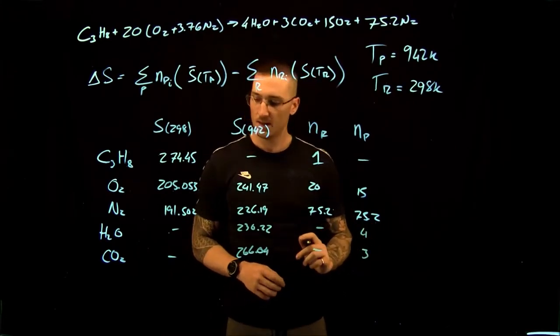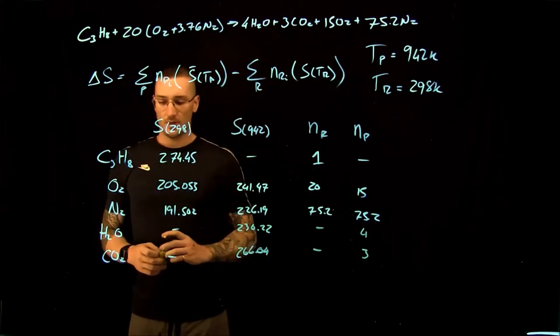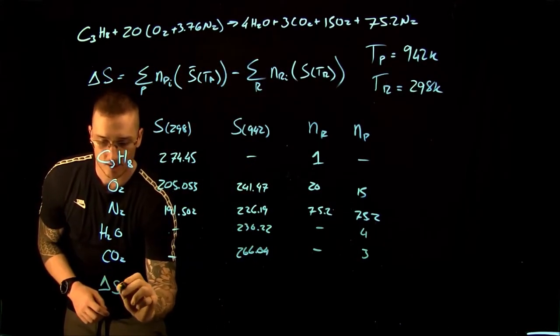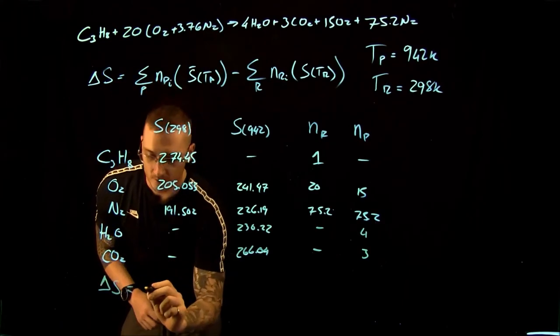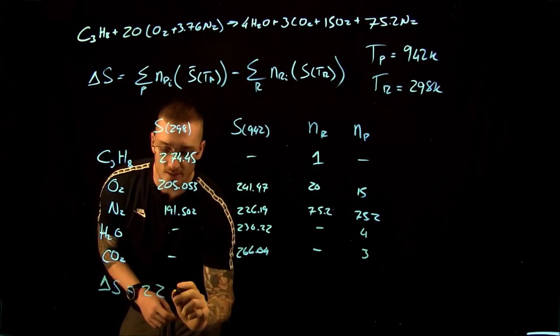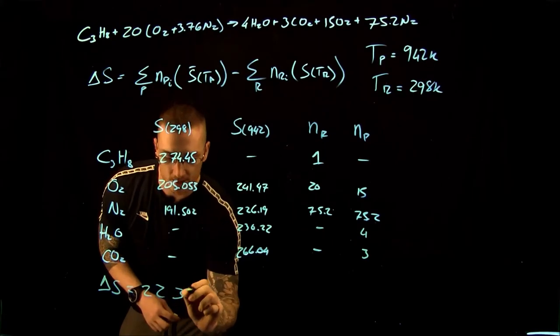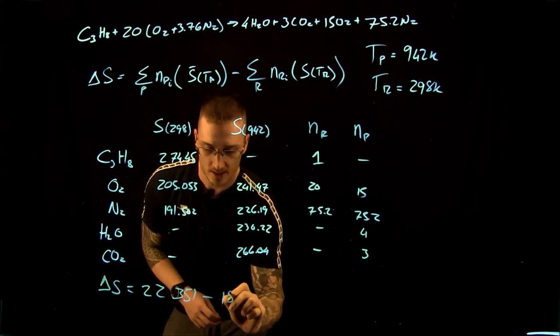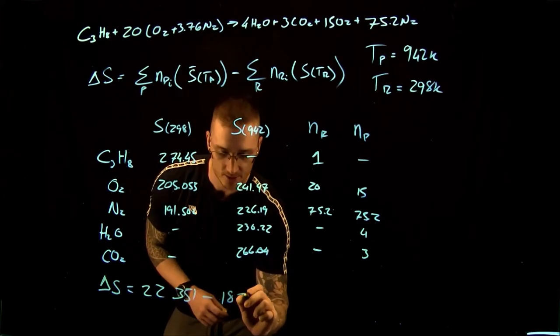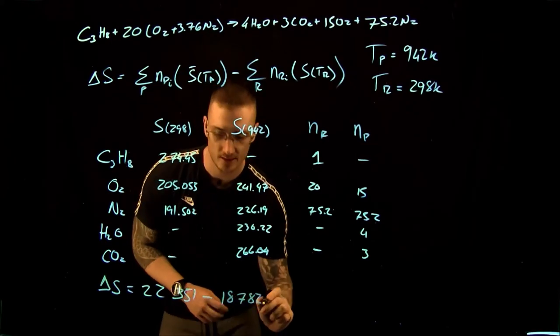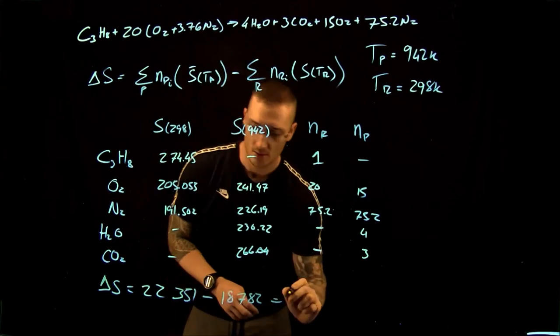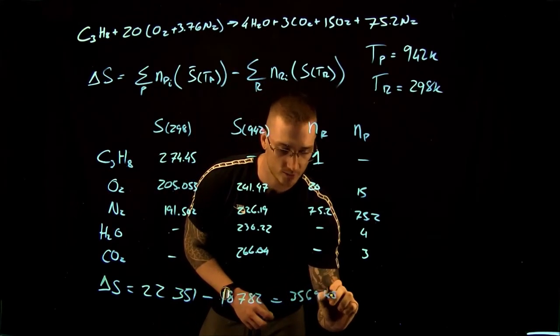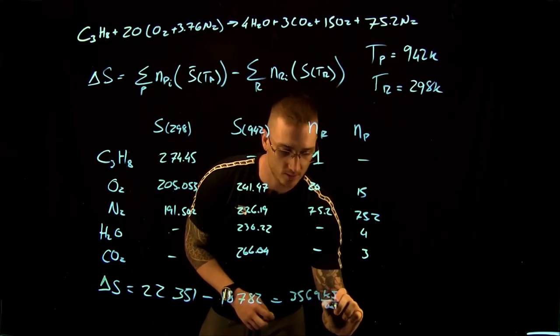So we get that our change in entropy is going to be equal to 22,351 minus 18,782. This gives us 3,569 kilojoules per kilomole Kelvin.